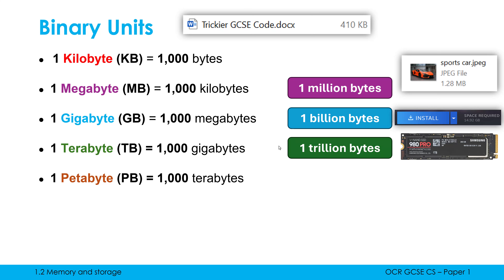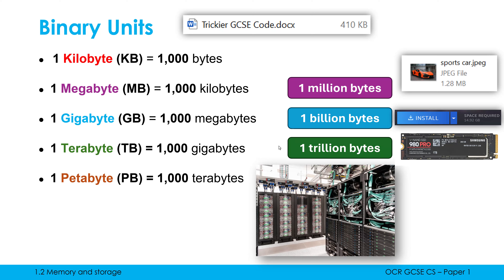The secondary storage on your computer itself is often a terabyte or more nowadays. Petabytes we can't really relate to as an individual person yet — maybe one day. But at the moment, if you're running a data center for cloud storage or cloud processing, you may well have petabytes of data across thousands of SSDs or hard drives.